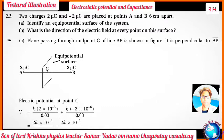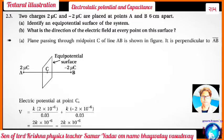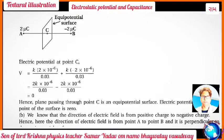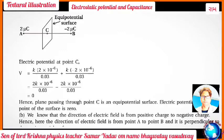Electric potential at point C: V = K×(2×10⁻⁶)/0.03 + K×(-2×10⁻⁶)/0.03. Both terms are 2K×10⁻⁶/0.03 and -2K×10⁻⁶/0.03, which cancel each other, giving V = 0. Hence the plane passing through point C is an equipotential surface; the electric potential at every point of this surface is zero.